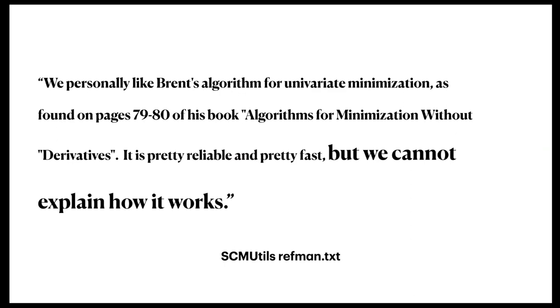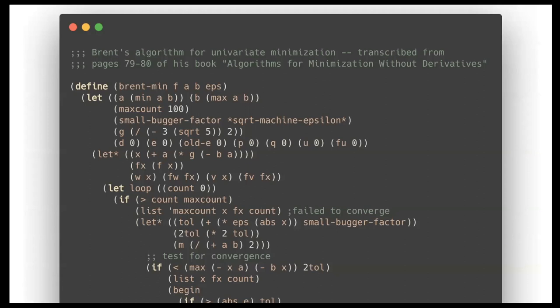I started digging into the library deeper and deeper into the guts to figure out, okay, the goal here is to embrace this idea of code as communication. Surely the code that backs the library will be beautiful artifacts of communication. And I dug into the reference manual for that, this thing called Brent's algorithm. It's a different minimizer than the one we just looked at. And I find quotes like this: we personally like Brent's algorithm. It's pretty reliable and pretty fast, but we can't explain how it works. So here we go. This is my first place where I can contribute to the field. I can embrace code as communication. So I dig into the code and I find this.